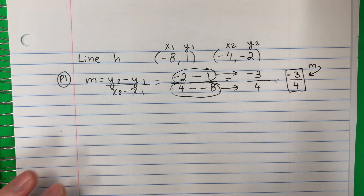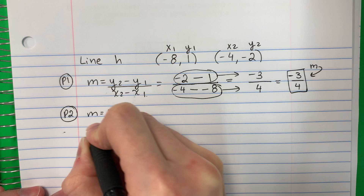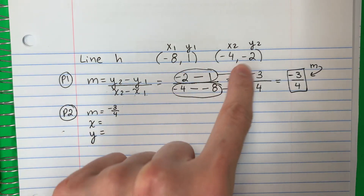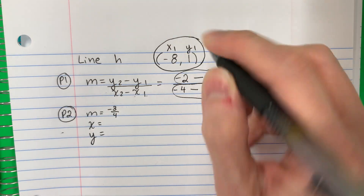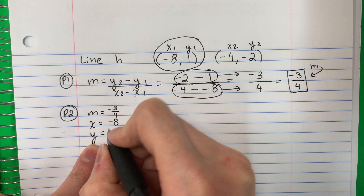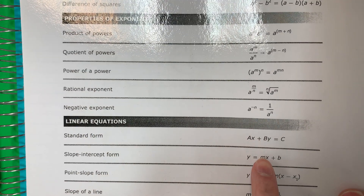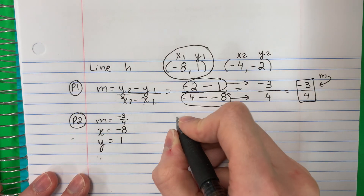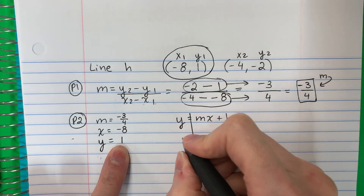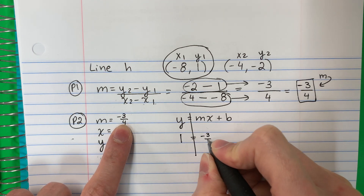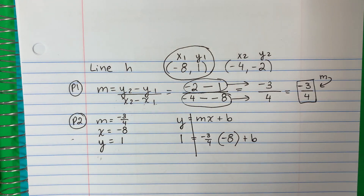Part two: I have M, I need B now. M equals negative three-fourths. For X and Y, I'll pick the pair negative eight, one. Using slope-intercept form Y equals MX plus B: one equals negative three-fourths times negative eight in parentheses, plus B. Parentheses first — in the calculator that gives six.